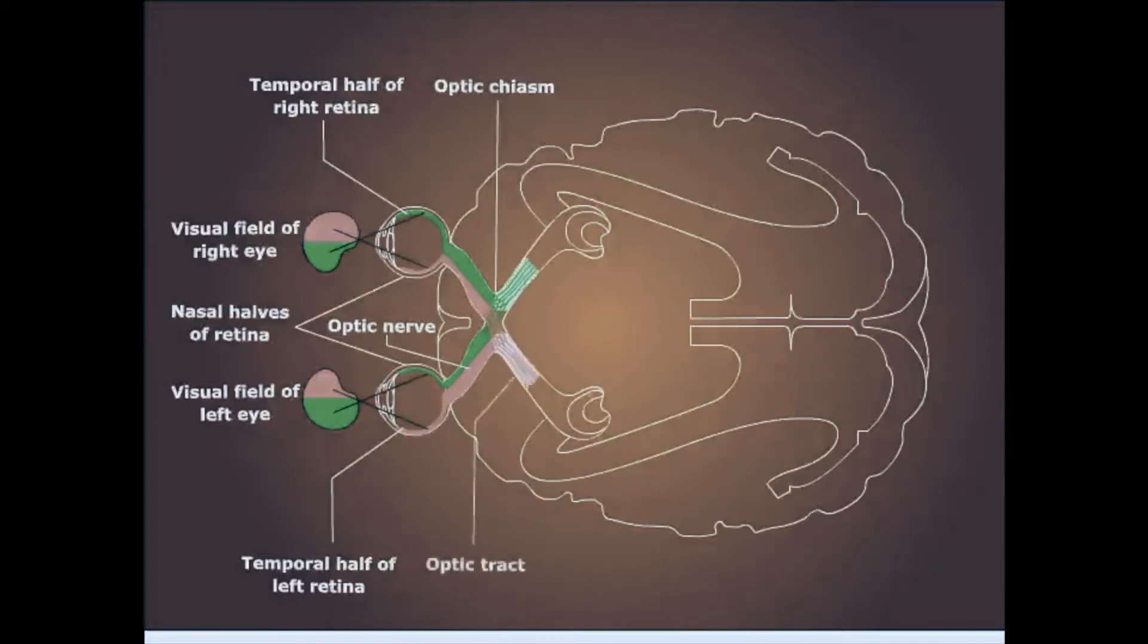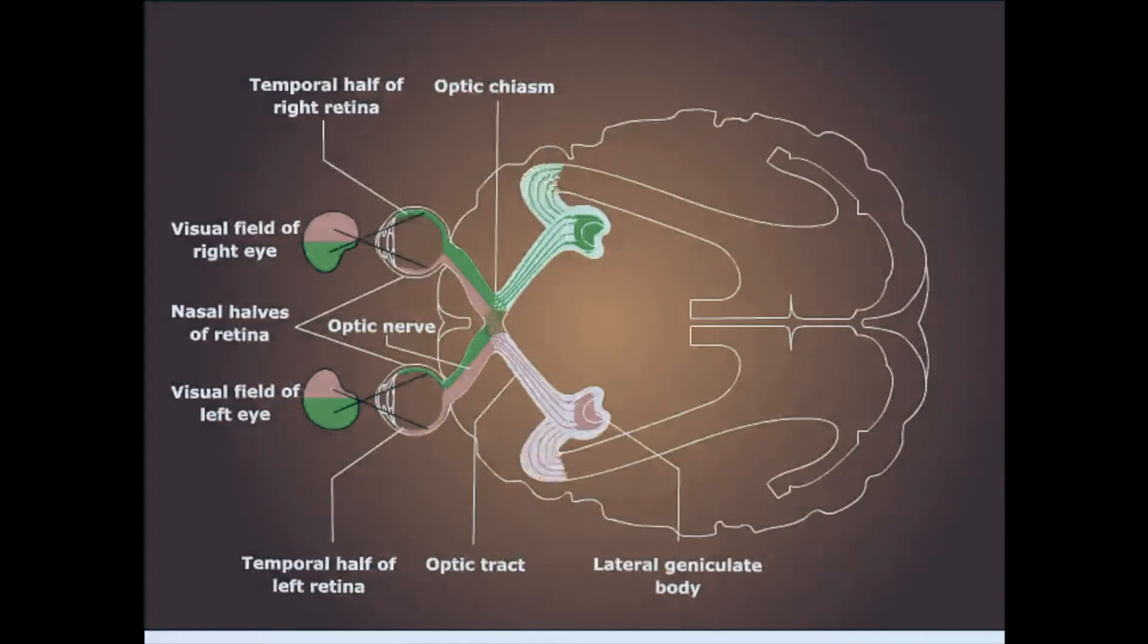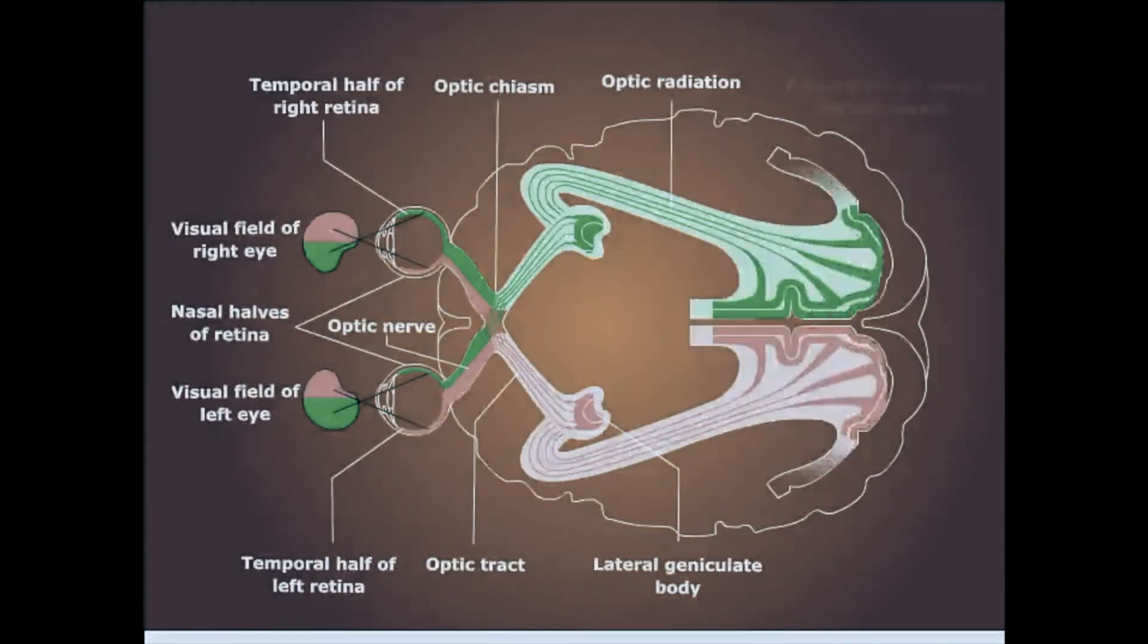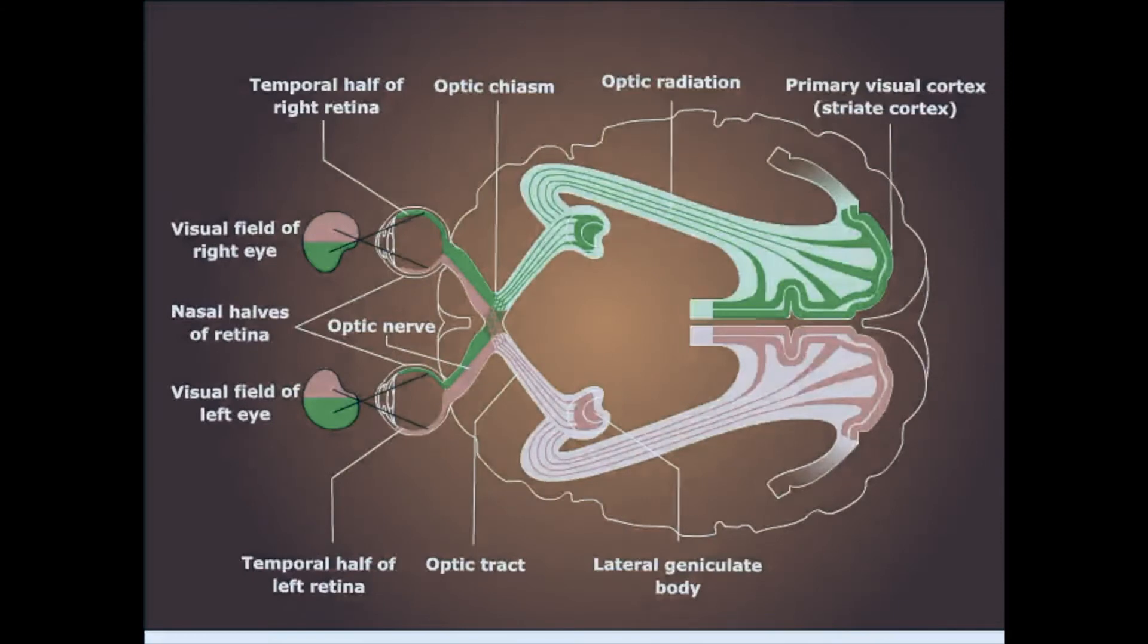The axons of the ganglion cells pass caudally in the optic nerve and optic tract to end in the lateral geniculate body in the thalamus. These thalamic axons then project via the optic radiations in the parietal lobe to reach the primary visual cortex at the posterior pole of the occipital lobe.